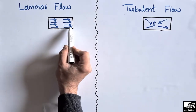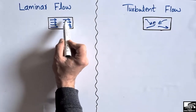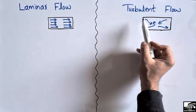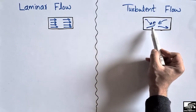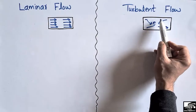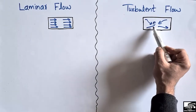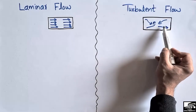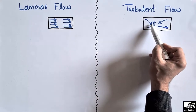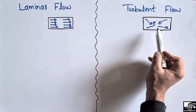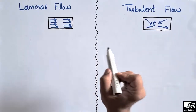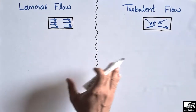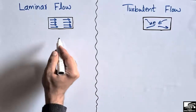Such type of flow is called laminar flow, in which the particles move parallel to each other and are not crossing one another. The other type of flow is the turbulent flow, where the movement of the particles of the fluid is disturbing — the particles are not moving parallel to each other but are crossing one another. Such type of flow is called turbulent flow.